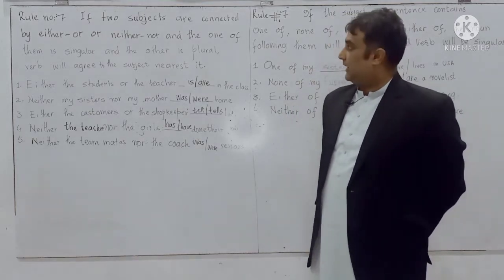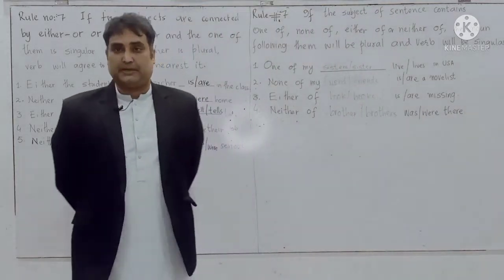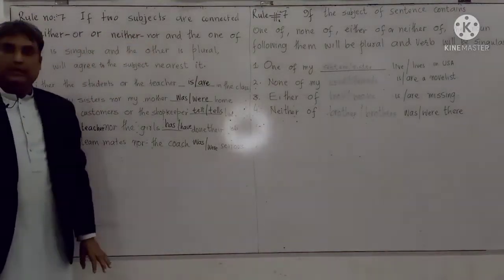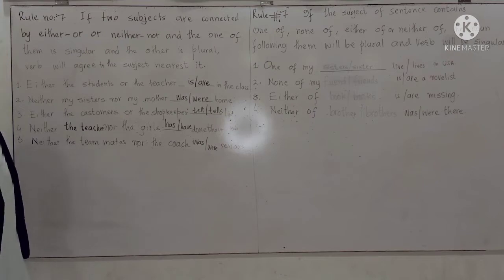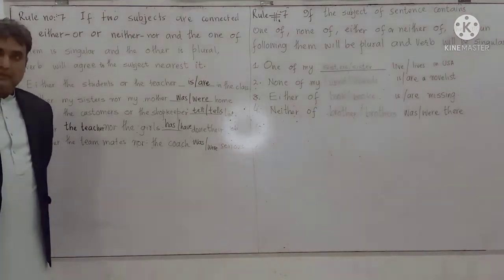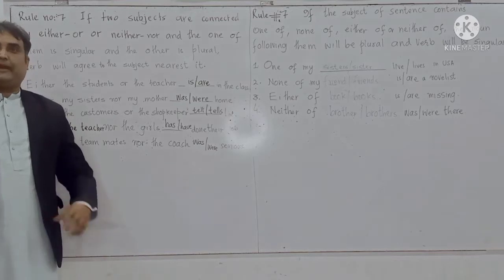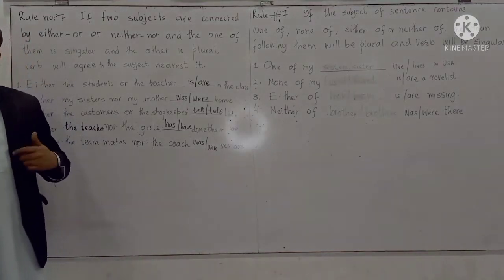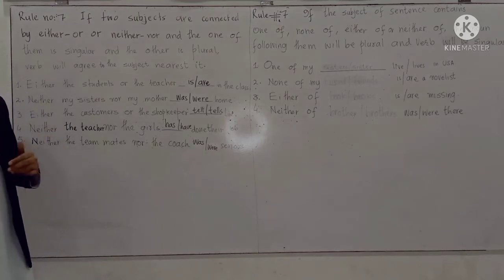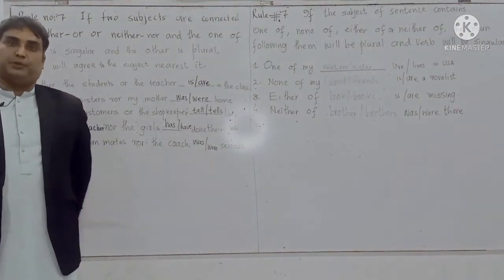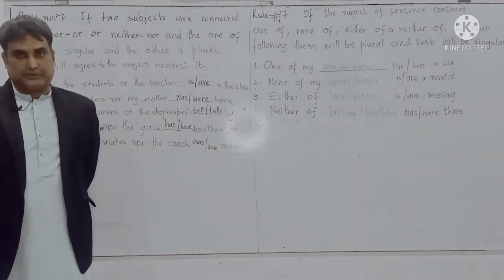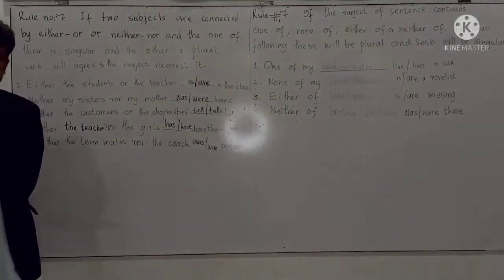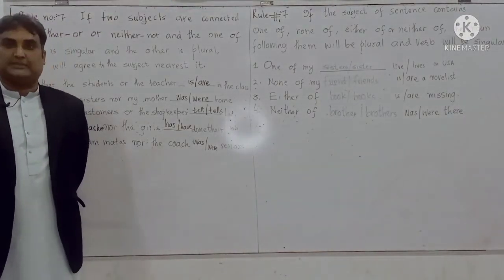Rule number seven: if two subjects are connected by either/or or neither/nor, and one of them is singular and the other is plural. In the previous lecture we discussed when both subjects are singular, the singular verb is used, and if both are plural, the plural verb is used. Now we will discuss what happens when one of them is singular and the other is plural.